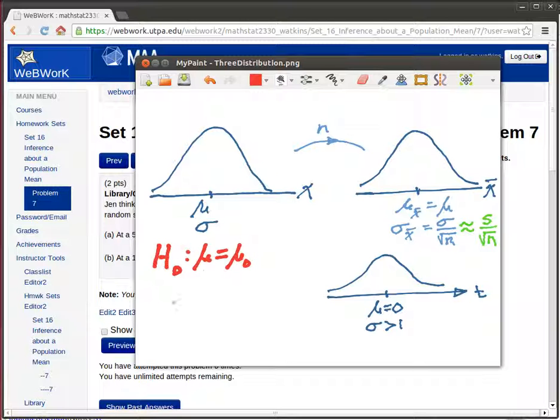In this problem they're not telling us what that is, but Jen is agreeing with the alternative hypothesis where she's saying that now the mean is less than what it used to be. So this is a one-tailed test.